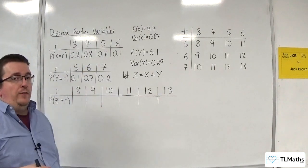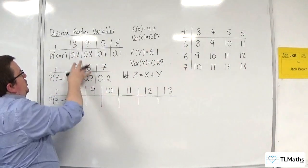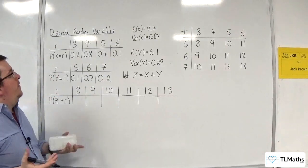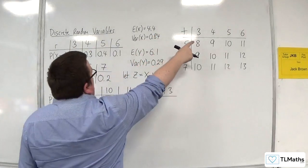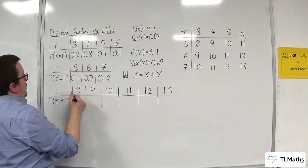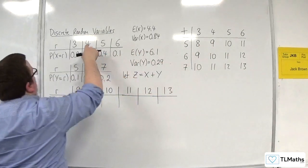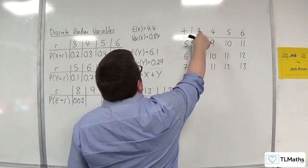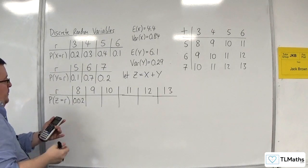Now we need the probabilities of each value occurring. We get 8 only by getting x = 3 and y = 5. This assumes the two distributions are independent — otherwise we can't calculate the probability. Assuming independence, P(z = 8) = 0.2 × 0.1 = 0.02. For z = 9 there are two ways: x = 4 and y = 5, giving 0.3 × 0.1, or x = 3 and y = 6, giving 0.2 × 0.7. Adding those gives P(z = 9) = 0.17.